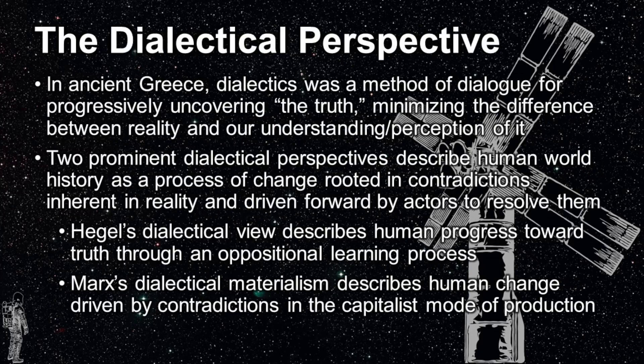There are two prominent dialectical perspectives that describe human world history as a process of change, rooted in contradictions inherent in reality, and driven forward by actors attempting to understand and resolve the resulting differences. The two prominent dialectic philosophers are Hegel and Marx. Hegel's dialectical view describes human progress toward truth through an oppositional learning process, while Marx's view of dialectical materialism describes human change driven by contradictions inherent in the capitalist mode of production.